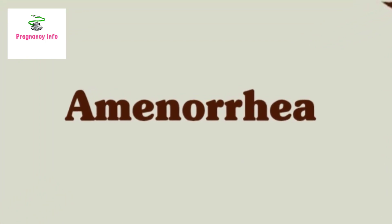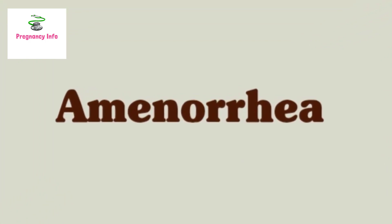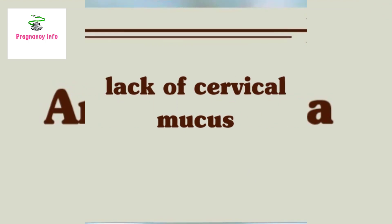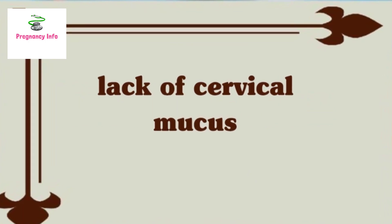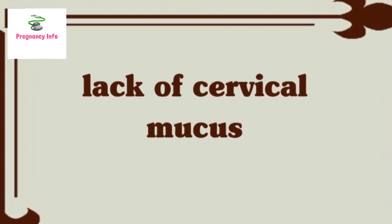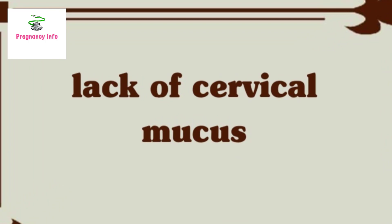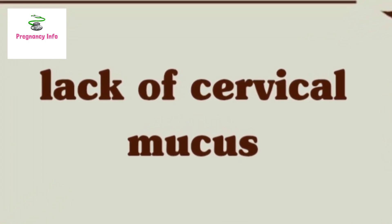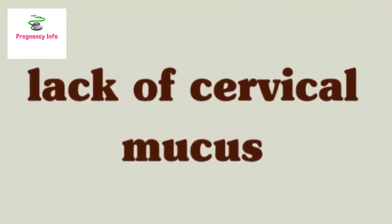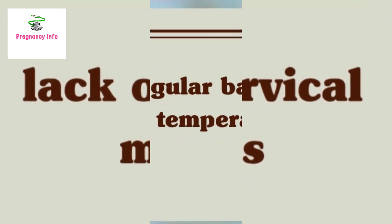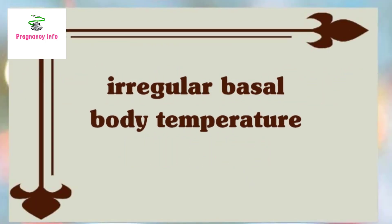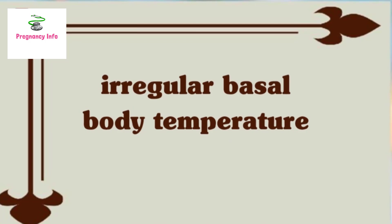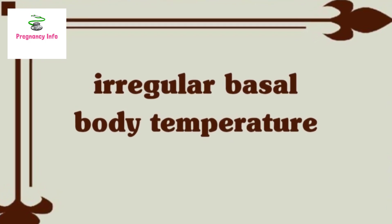Having a lack of periods, or amenorrhea — missing one or more periods without being pregnant — could be a sign of anovulation. Having a lack of cervical mucus is another sign. Right before and during ovulation, you usually have the most vaginal discharge, called cervical mucus, which usually looks like raw egg whites. If you don't have this discharge, you may be experiencing anovulation.